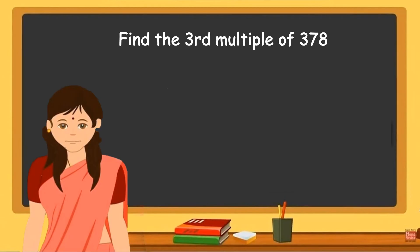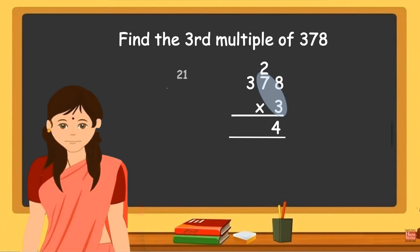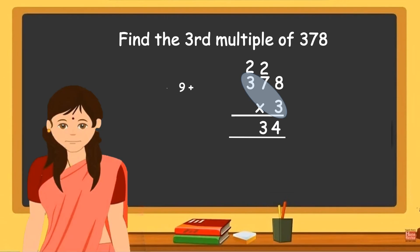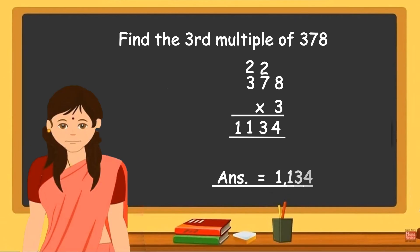Next, let us see how to find the third multiple of 378. Third multiple of 378 means you have to multiply 378 into 3. First, 3 eights are 24 — write 4 and carry over 2. Then multiply 3 sevens are 21, plus the carry over 2, equal to 23 — write 3 and carry over 2. Last, multiply 3 threes are 9, plus the carry over 2, equal to 11 — write 1 in the hundreds place and 1 in the thousands place. The third multiple of 378 is 1134.